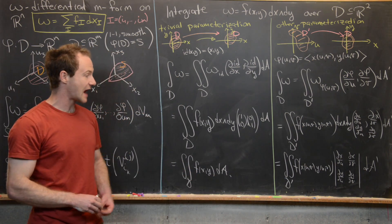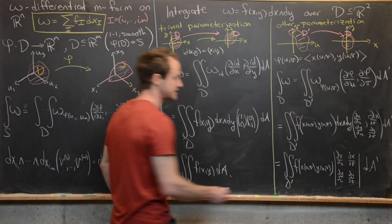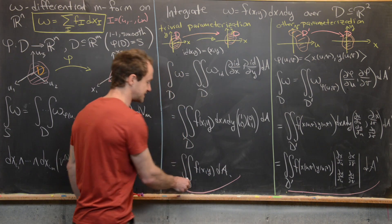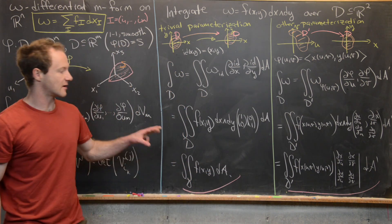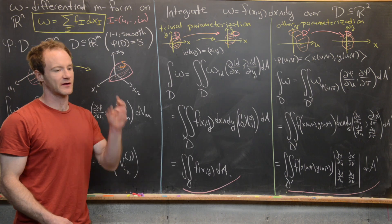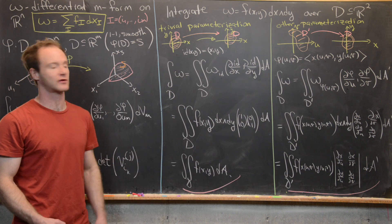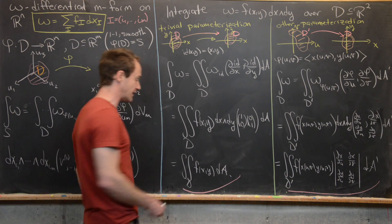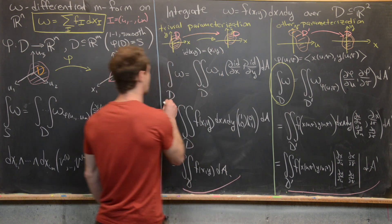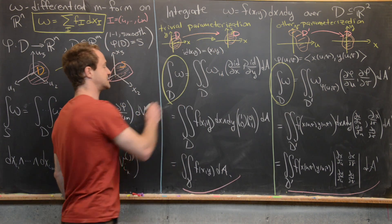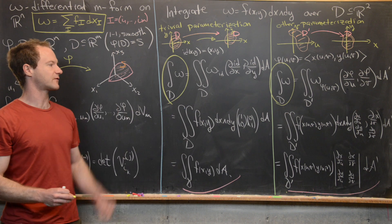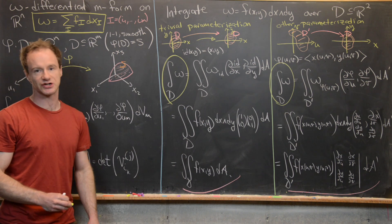Comparing the two results, the first integral equals the second — and that's exactly the change of variables formula for double integrals from Calculus 2. We've linked both through the integral of this differential 2-form on R2 with different parametrizations.